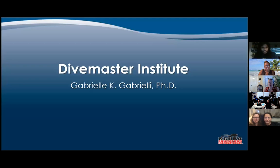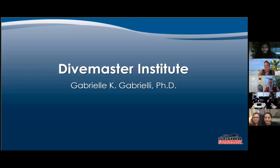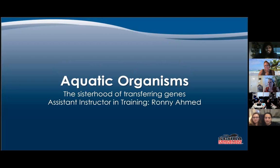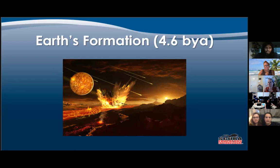Thanks for being here everyone. So like Capriel mentioned, we'll be going over aquatic organisms. We're going to start with Earth's formation 4.6 billion years ago. Pictured is the Great Impact Theory, which theorizes how the moon was formed 4.5 billion years ago.